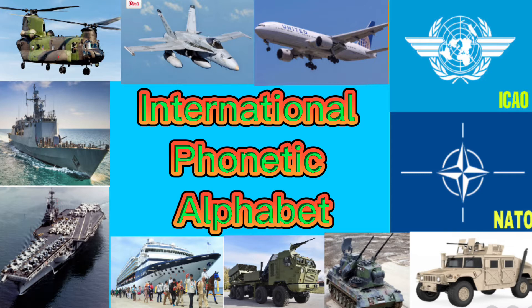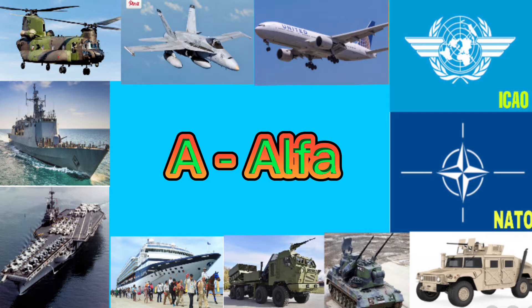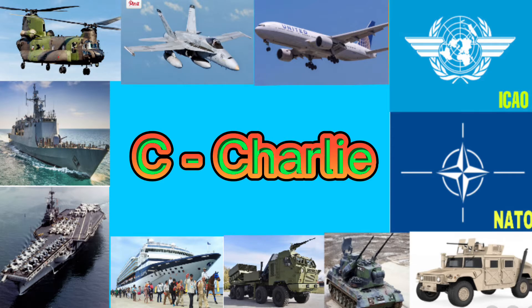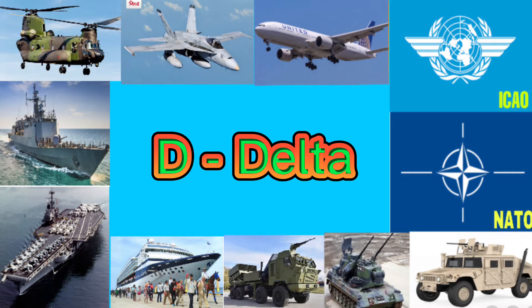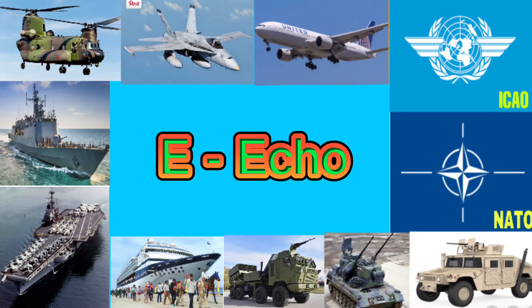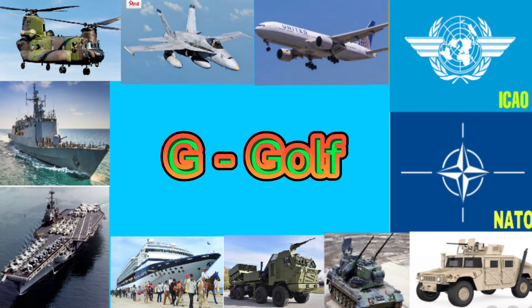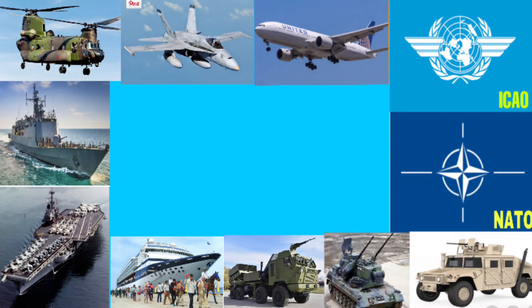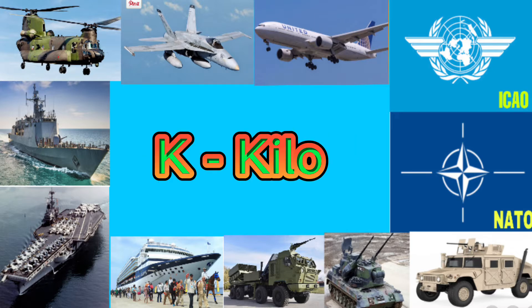Complete international phonetic alphabet. A is Alpha, B is Bravo, C is Charlie, D is Delta, E is Echo, F is Foxtrot, G is Golf, H is Hotel, I is India, J is Juliet, K is Kilo.